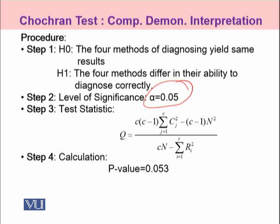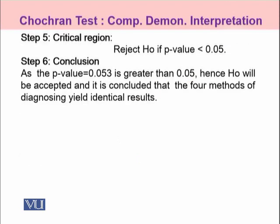The test statistic is Q, and as you can see in the SPSS output window, SPSS has calculated the value of Q and against that Q value, the asymptotic P-Value is calculated as 0.053. By taking this P-Value, we can decide upon our rejection region, which is that we reject the null hypothesis if our P-Value — the probability of the extreme — is less than our desired alpha.